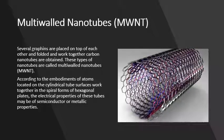Multi-walled nanotubes. Several graphene layers are placed on top of each other and folded and work together. Carbon nanotubes are obtained. These types of nanotubes are called multi-walled nanotubes. According to the arrangement of atoms located on the cylindrical tube surface, they work together in the spiral form of hexagonal layers. The electrical properties of these tubes may be of semiconductor or metallic properties.